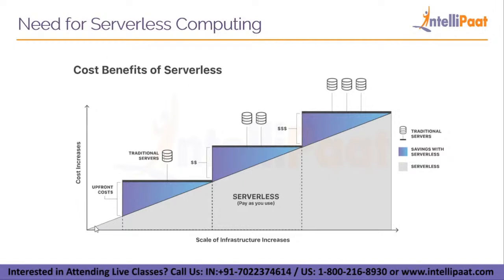Let's say you've developed an app and expect 10 requests from users each day. At the start you won't purchase any servers — you'll just be running on your personal or office computer. Let's say one server handles 100 requests. When your app gets popular and you purchase a server, you are essentially wasting the blue triangle area — you are wasting that much server space and cost until your requests reach 100 per day.